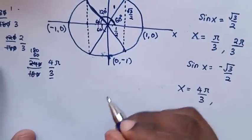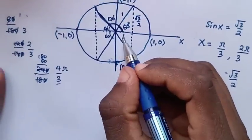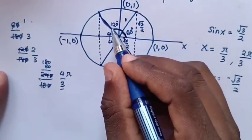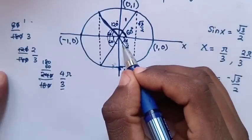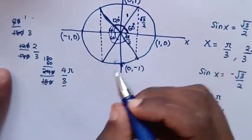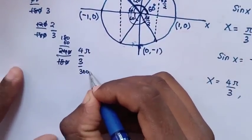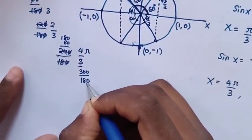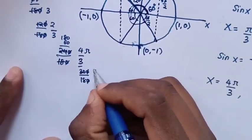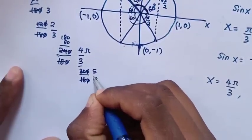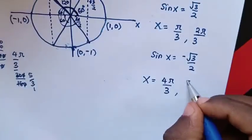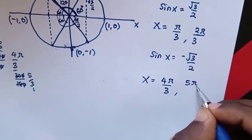The other angle for sin x negative has 60 degrees below the x-axis on the other side, giving 360 minus 60 equals 300 degrees. Converting: 300 divided by 180 times pi simplifies to 5 over 3 times pi, which is 5 pi over 3. So x equals 5 pi over 3.